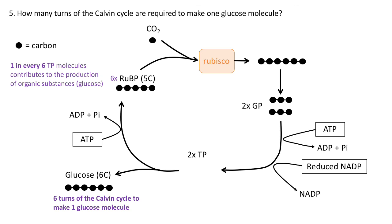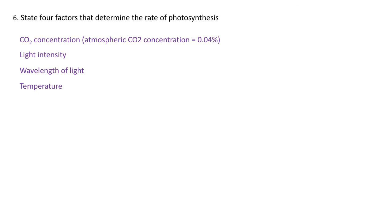Hopefully that helped you understand how many turns of the Calvin cycle are used to make a single glucose molecule. These are your answers for the four factors that determine the rate of photosynthesis. Remember it's really important that you apply this knowledge to graphs and data regarding how these factors affect each other and how limiting factors work. Don't just revise these — go on to apply this knowledge to data, which is a common format for exam questions.